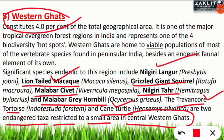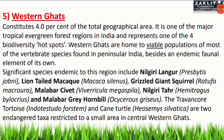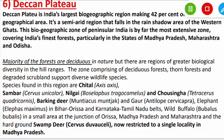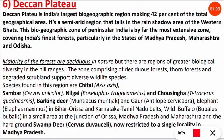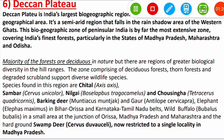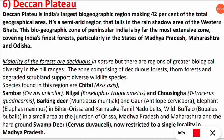The Deccan Plateau is India's largest biogeographic region, constituting 42% of India's total geographical area. It is a semi-arid region that falls in the rain shadow area of the Western Ghats. It covers India's finest forests, particularly in the states of Madhya Pradesh and Maharashtra. The majority of forests are deciduous in nature, though there are regions of greater biological diversity in the hill ranges comprising deciduous forest, thorn forest, and degraded scrubland.